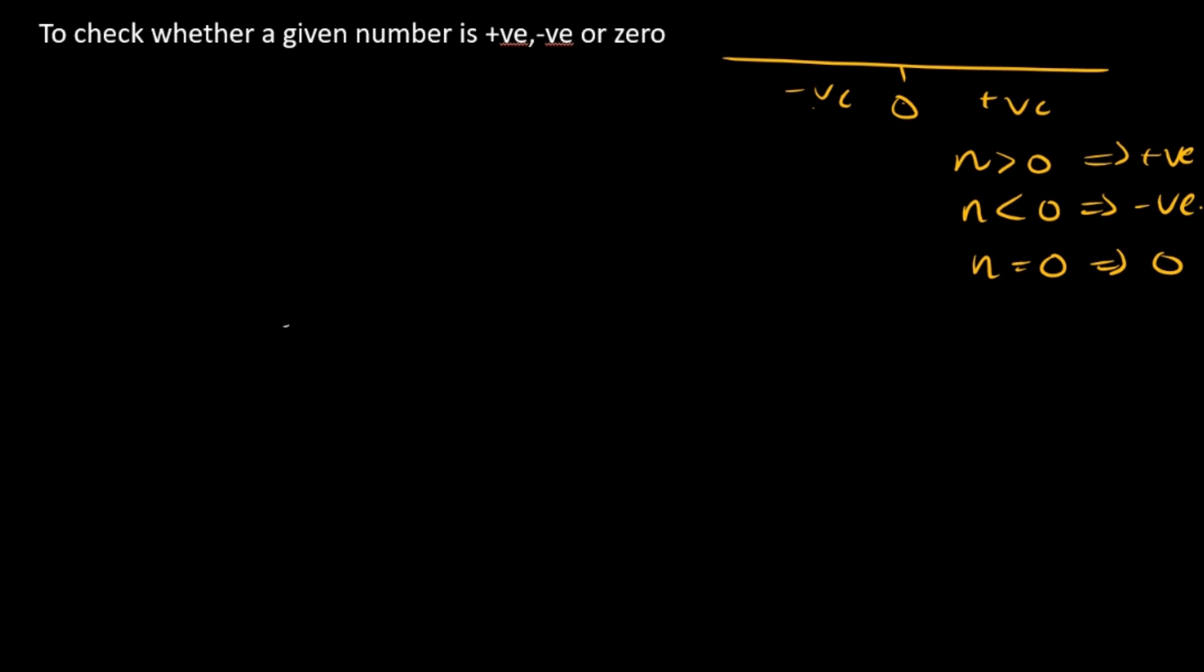Step one is start. Two: input the number n. So input n. Third step, now we start with the cases. Okay, first case I'm taking it as positive. So if it's a decision making, n is greater than zero, okay, then print